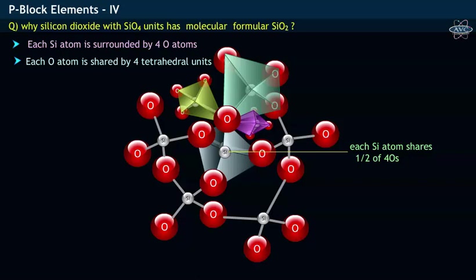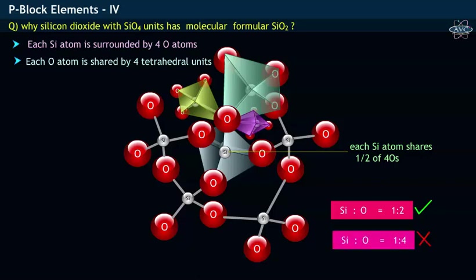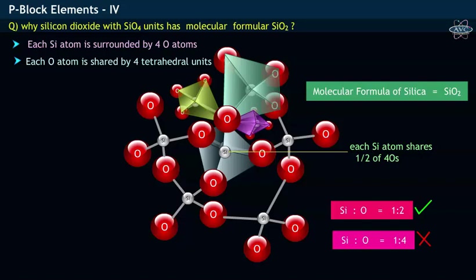Due to this reason, the ratio of silicon to oxygen in the silica structure should be 1:2 instead of being 1:4. Hence, the molecular formula of silica is SiO2 instead of SiO4.